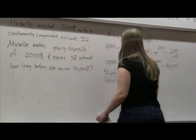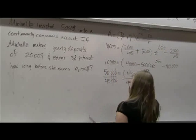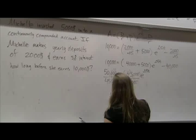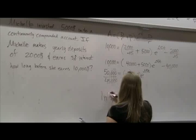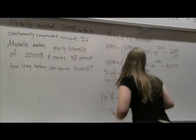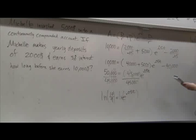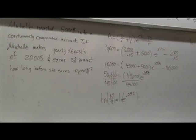So then 50 would be 10, 10 ninths is equal to e to the 0.05t. Take the ln of both sides. So then I'm having ln of 10 ninths equals 0.05t. Everyone follow this step? We're doing good. We're making good time. I'm excited to eat some dinner, maybe get some sleep tonight.